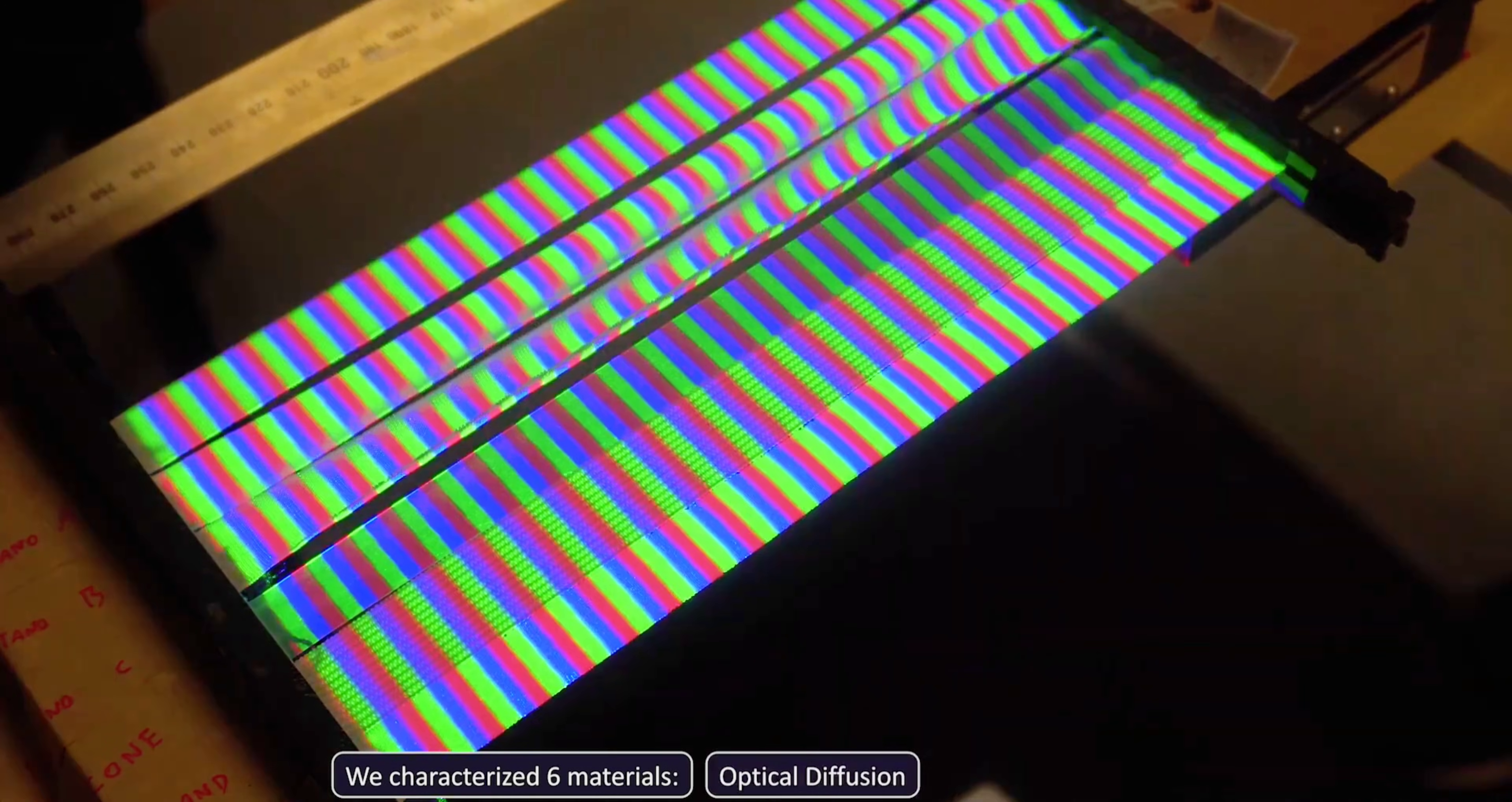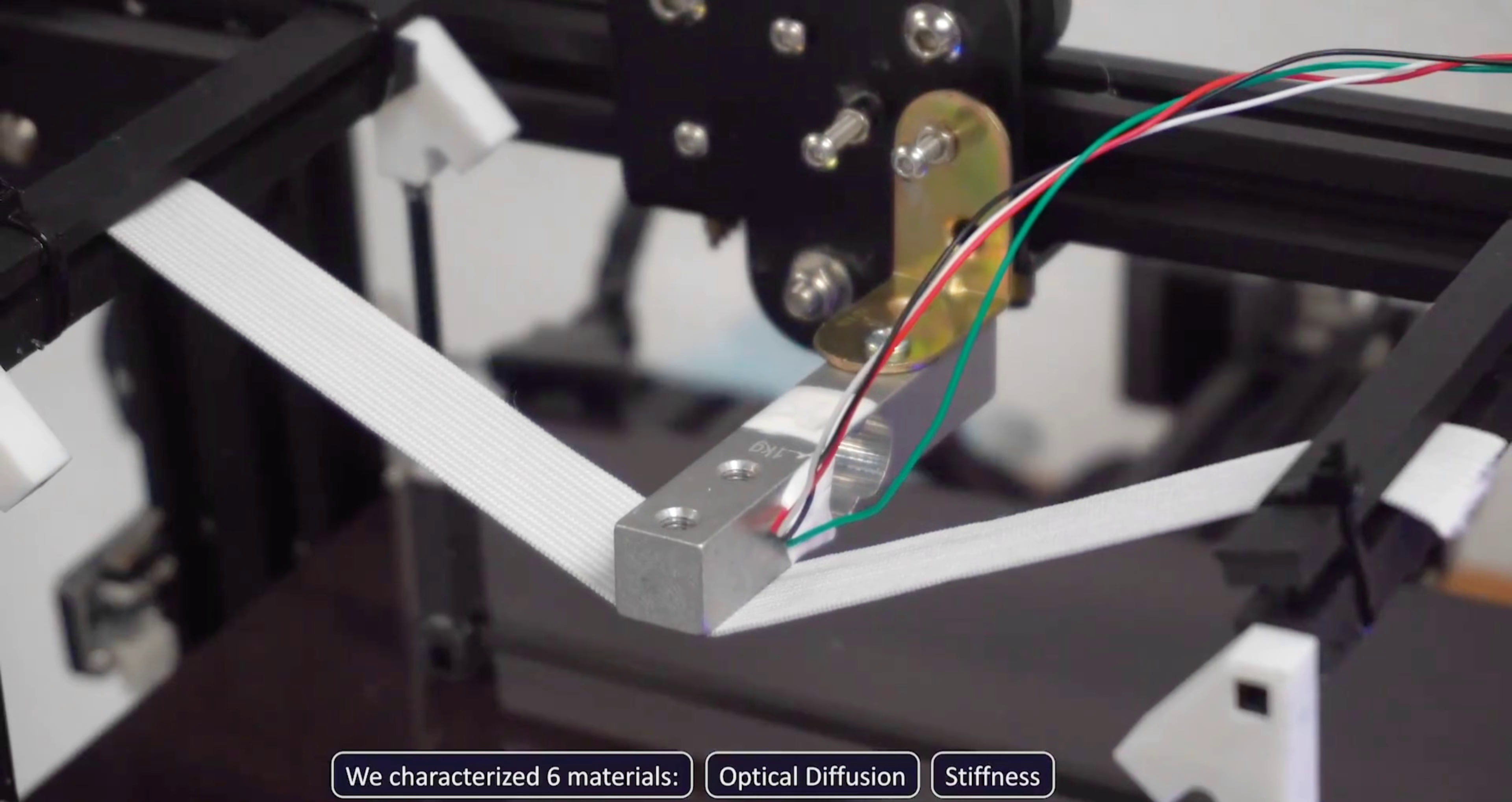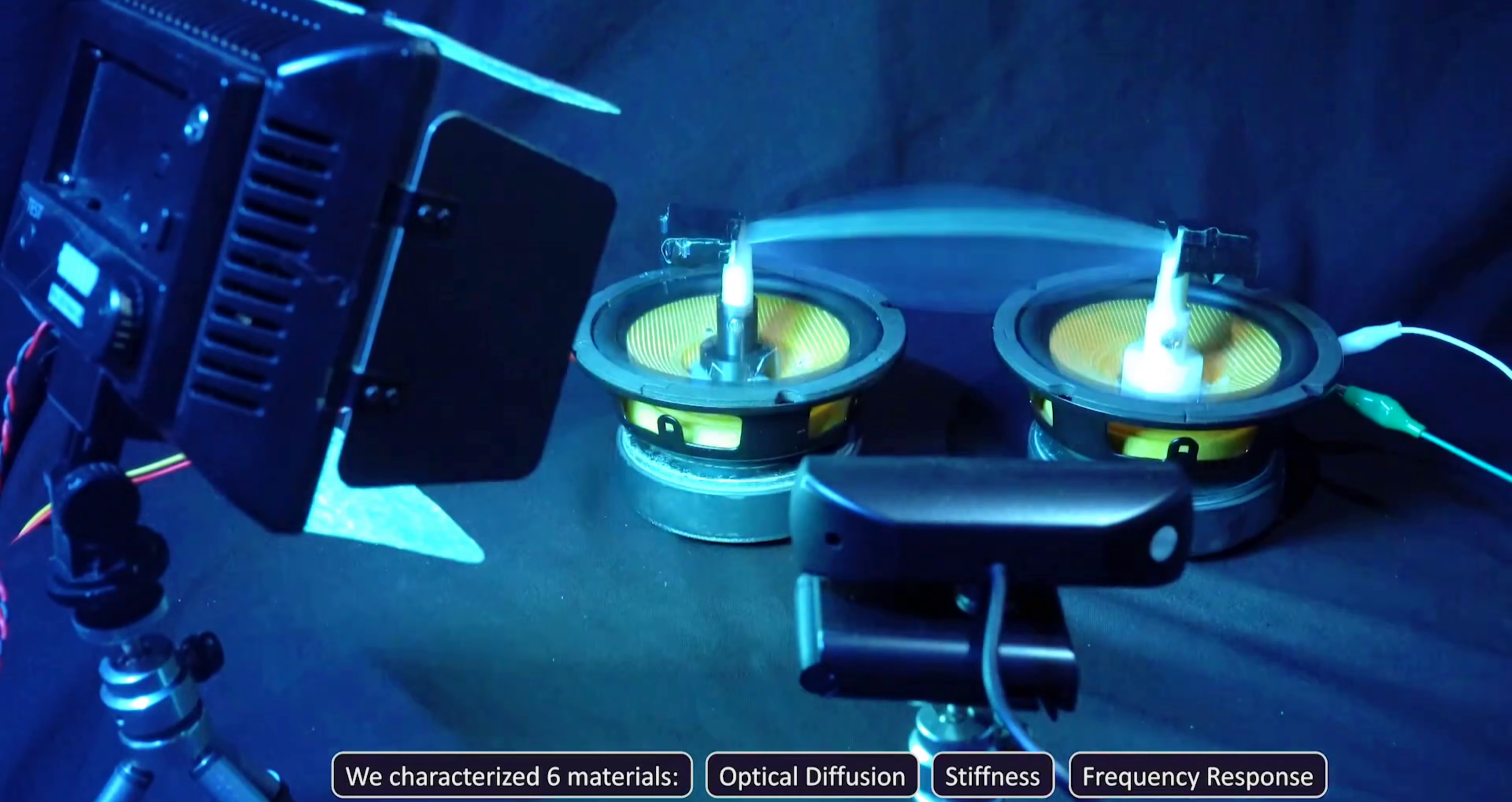To address visual distortion caused by the movement of the elastic diffuser, the team developed a correction algorithm. This model predicts the shape of the diffuser at any point during oscillation and adjusts the projected image accordingly.